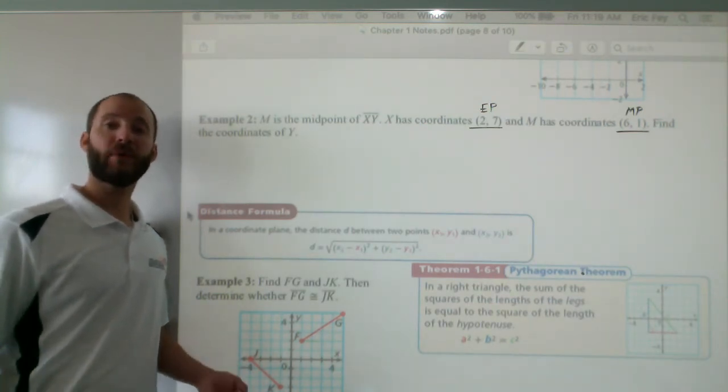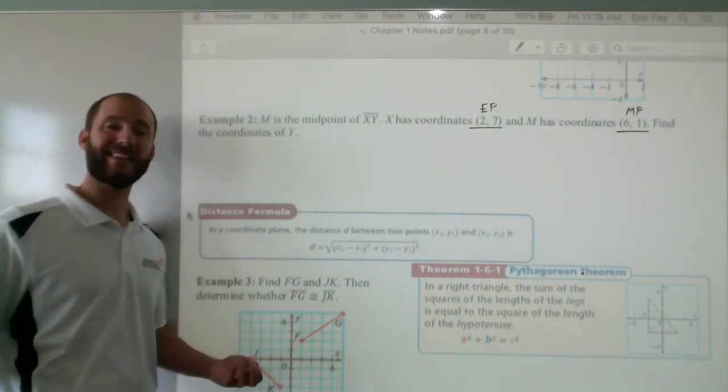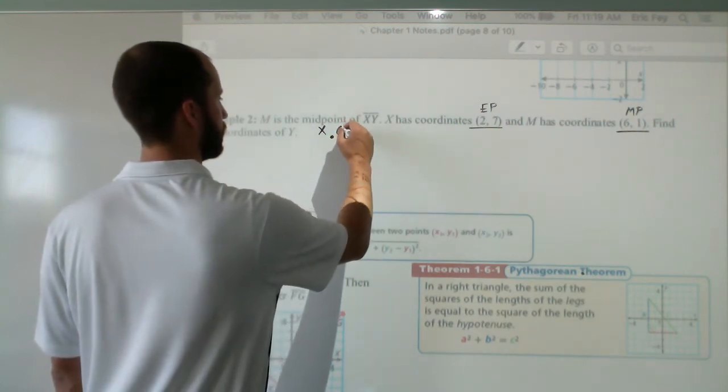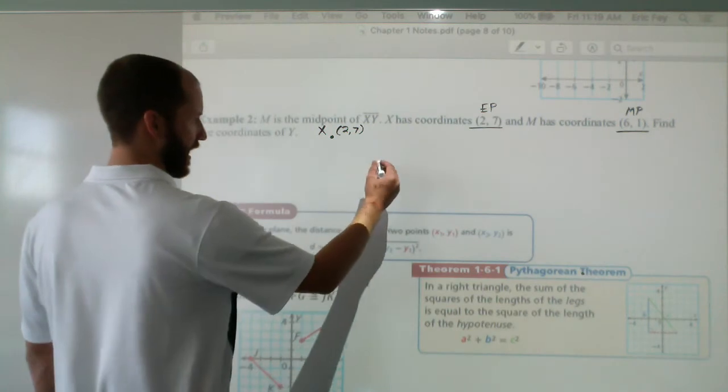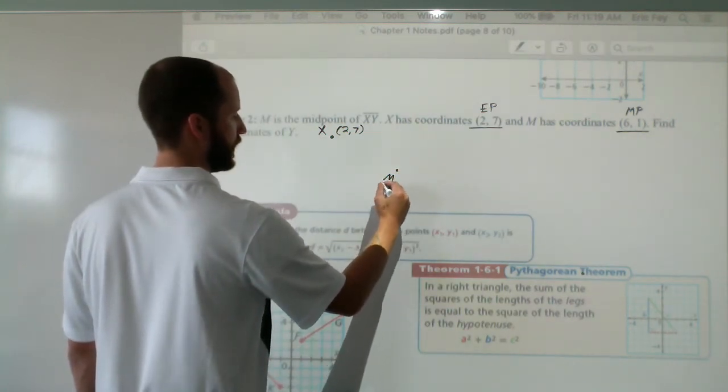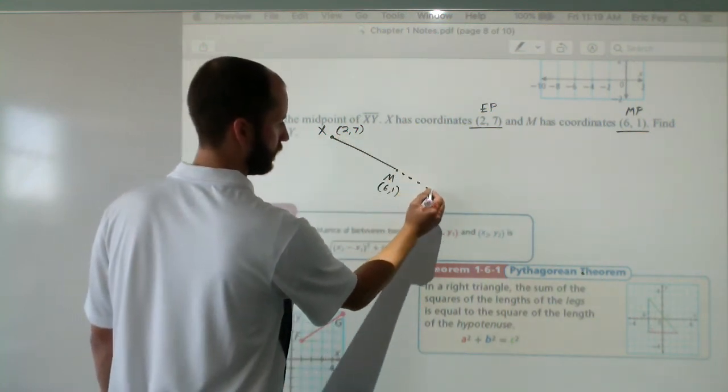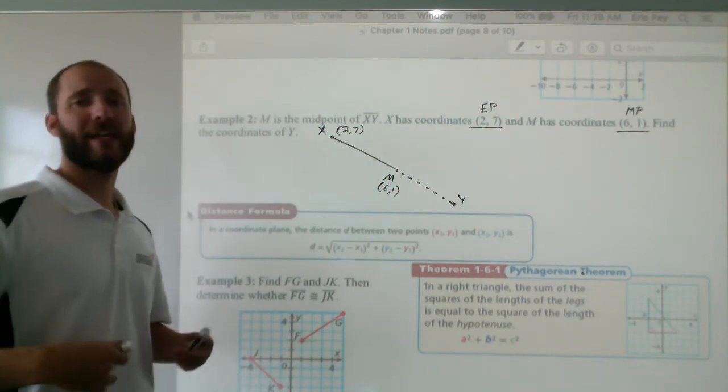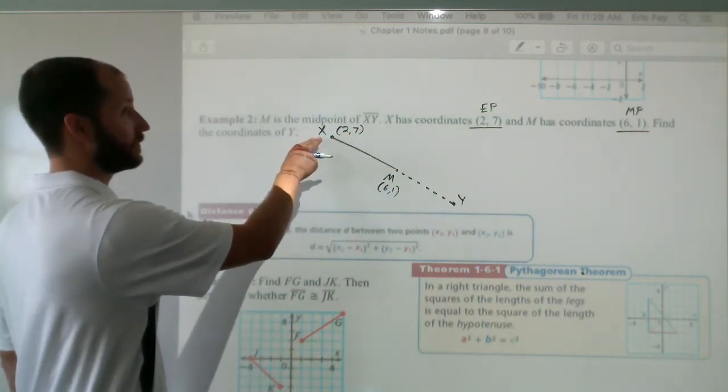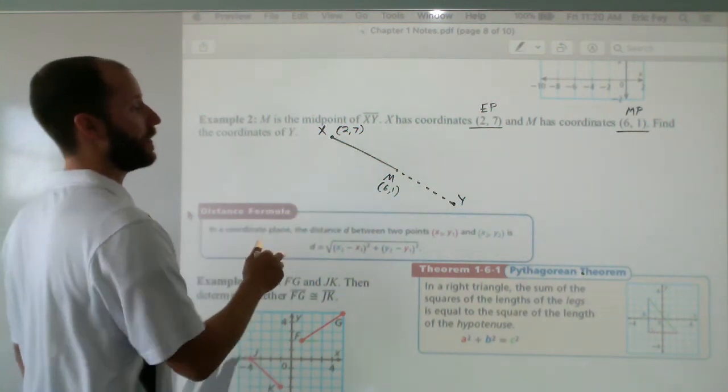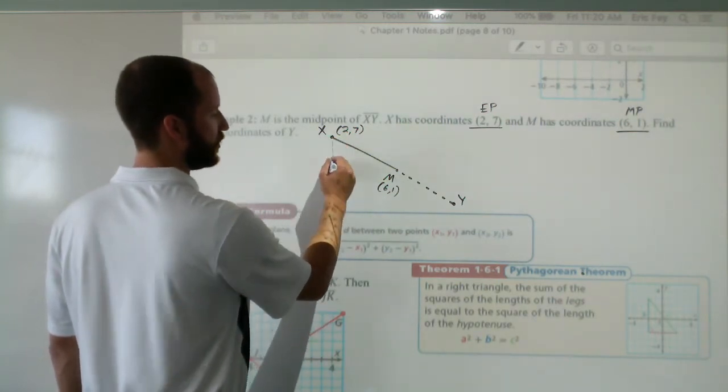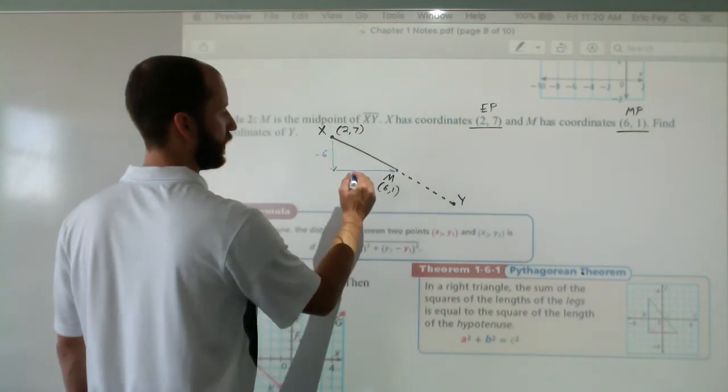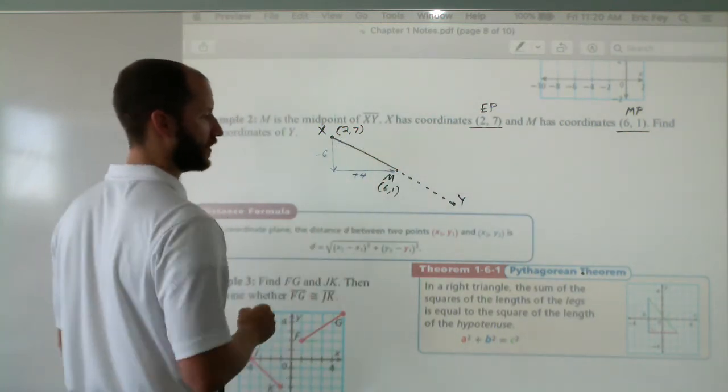There's a couple of ways that you can go about this. Me, personally, I'm really into visuals, being able to see what I'm doing. So I know that x is over here at 2 comma 7. m is over here at 6 comma 1. And I want to get to y. So let's talk about a story. How do you get from x to m? Well, to get from x to m, you'd have to go down 6 units from 7 down to 1. And then over to the right 4 units from 2 to 6.